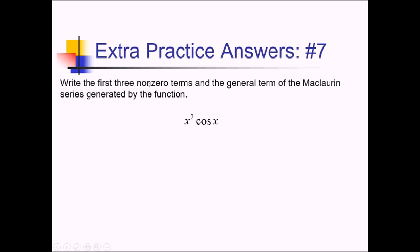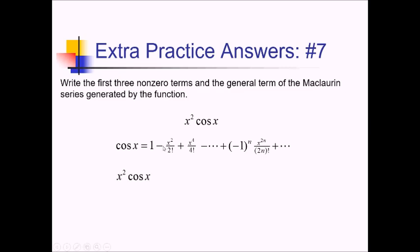For this problem, we want the first three non-zero terms and general term of the Maclaurin series for x squared times cosine of x. The Maclaurin series for cosine of x is 1 minus x squared over 2 factorial plus x to the fourth over 4 factorial, with general term negative 1 to the n times x to the 2n over 2n factorial. Multiplying everything by x squared: x squared minus x to the fourth over 2 factorial plus x to the sixth over 4 factorial, and more generally, negative 1 to the n times x to the 2n plus 2 over 2n factorial.